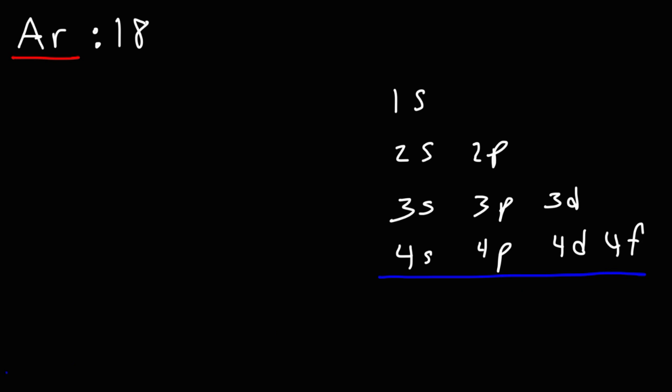The s sub-level can hold up to two electrons, p can hold up to 6, d can hold up to 10, and f can hold up to 14. We're going to write the configuration until the exponents add up to 18.